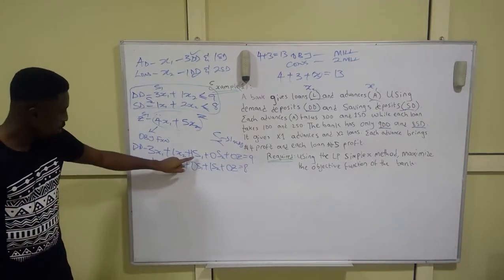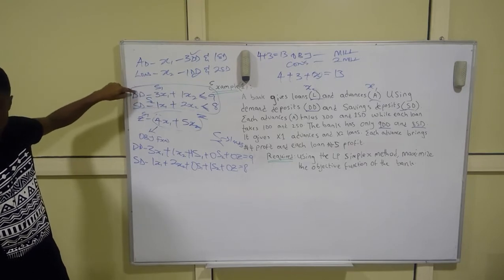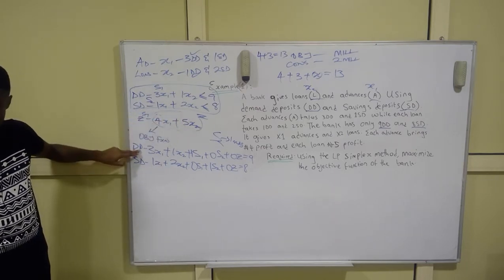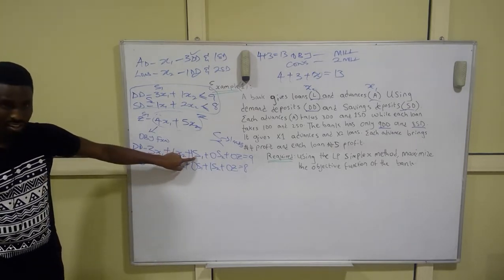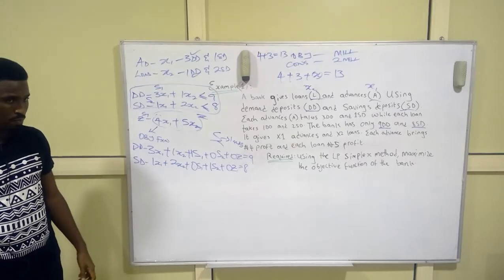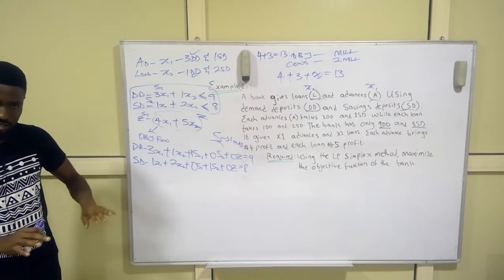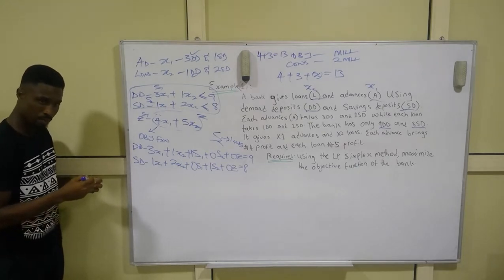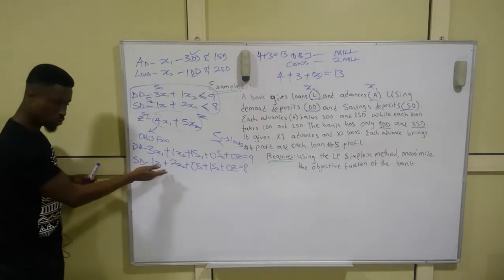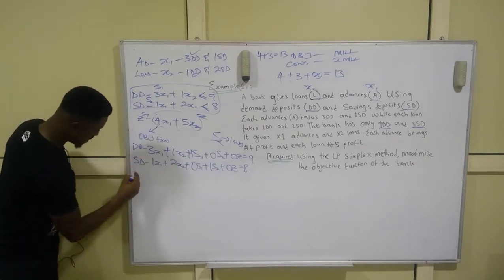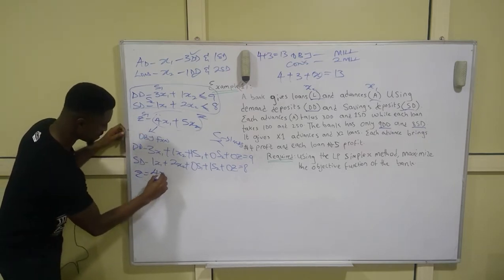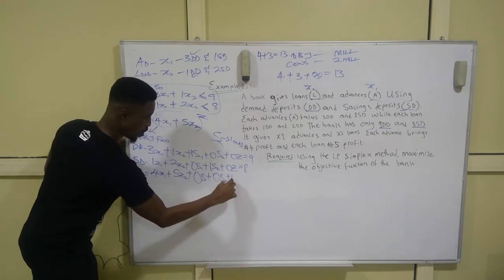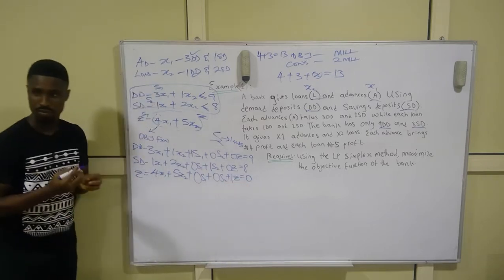The slacks clarify which constraint each row belongs to. s1 represents the DD constraint, s2 represents the SD constraint, and z represents the objective. For the objective function row: 4x1 + 5x2 + 0s1 + 0s2 + 1z = 0.